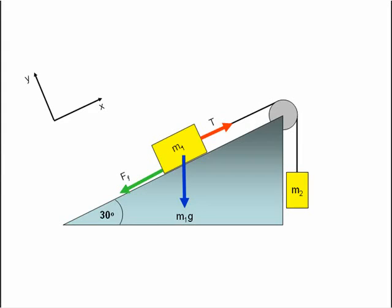Let's consider M1 first. The forces acting on M1 are the force of gravity acting vertically downwards, that's M1g, the tension in the rope acting upwards along the slope, that's T, and the force of friction acting downwards along the slope in the opposite direction to the movement of the block.